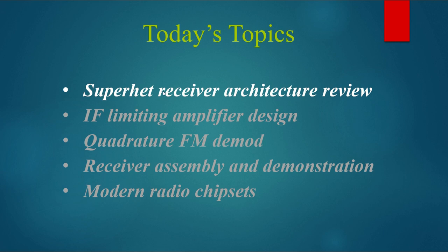Let's see where we've been and where we're going. We'll start off looking at the super heterodyne receiver architecture to review how that works. And then we'll go into the new circuits today, which is an IF limiting amplifier and a quadrature FM demod. After we've got that done, we'll put it all together and demonstrate it. And we'll finish up by looking at some of the chips that we've used in the class in the past, and at some more highly integrated designs.